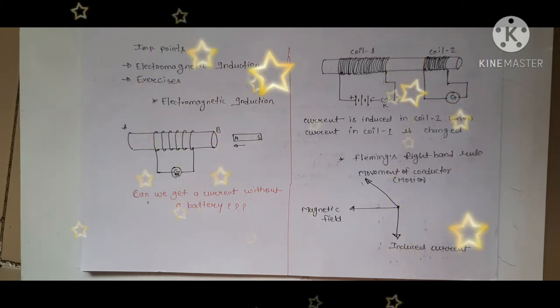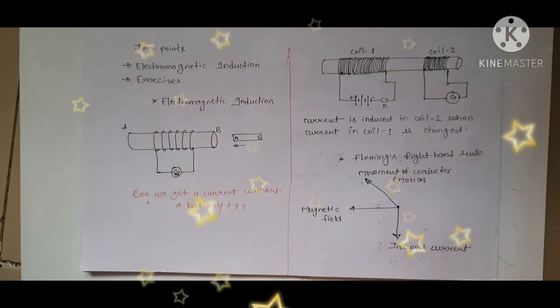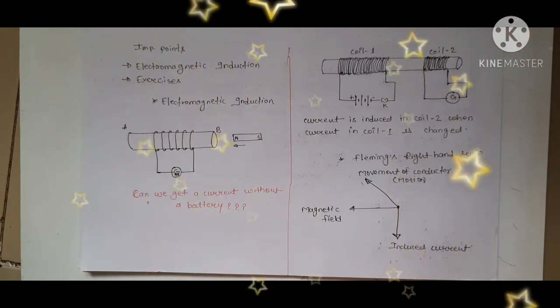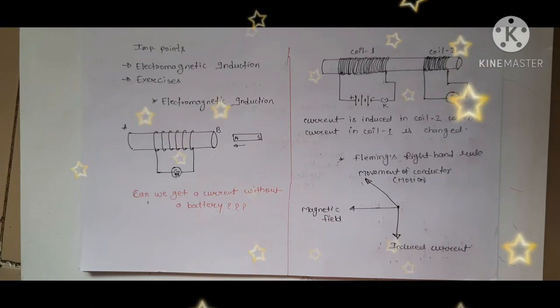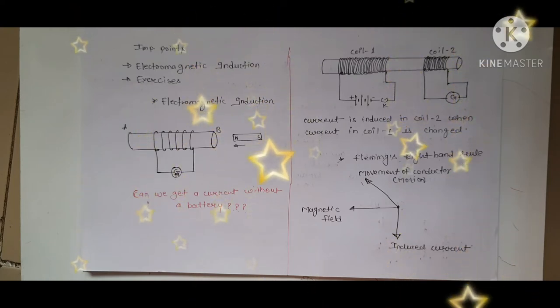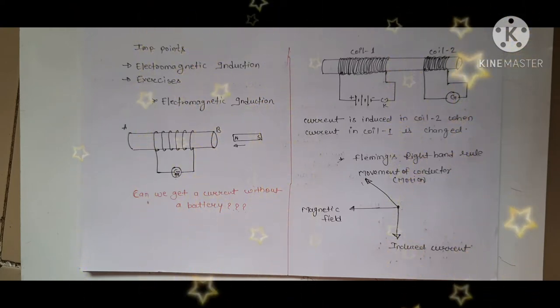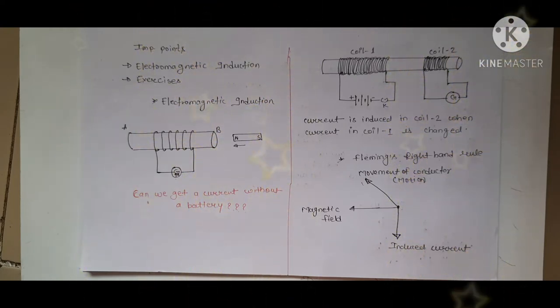So far we have learned so many topics like solenoid, force on a current carrying conductor, magnetic field due to a straight conductor, circular loop, and magnetic field lines.